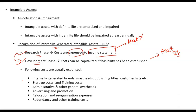Moving on, there are certain other items that are usually expensed. These include internally generated brands, mastheads, publishing titles, and customer lists — any such asset should generally be expensed under IFRS and not recorded as an asset. Other items that must be expensed include startup costs, training costs, administrative and other general overheads, advertising and promotion, relocation and reorganization, redundancy and other training costs, any training required to use an asset, and administrative overheads like utilities and electricity incurred during development. These should be expensed and not recorded as an asset on the balance sheet.